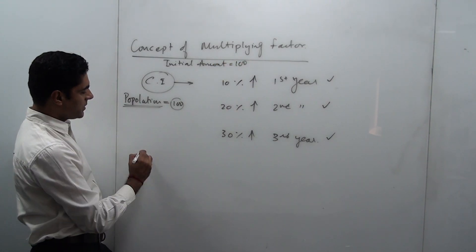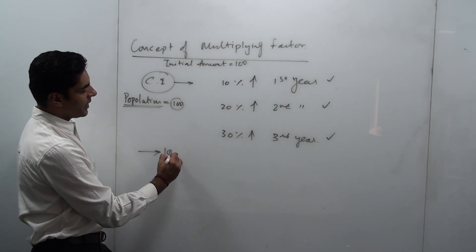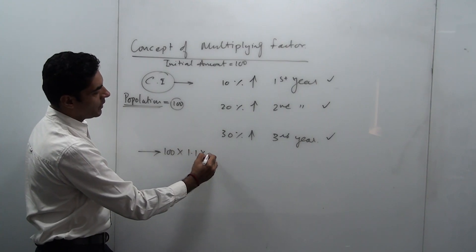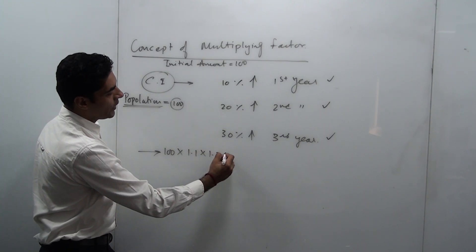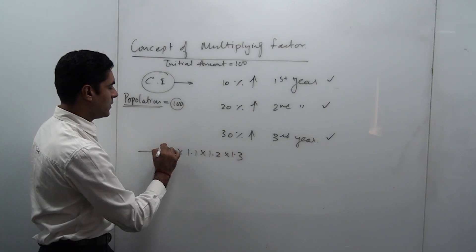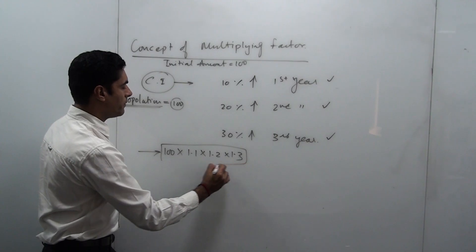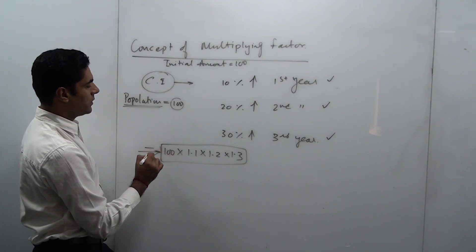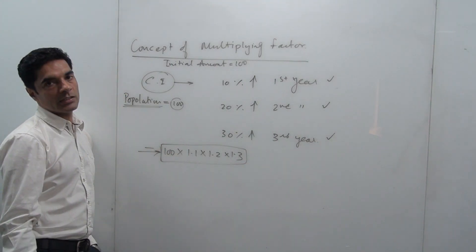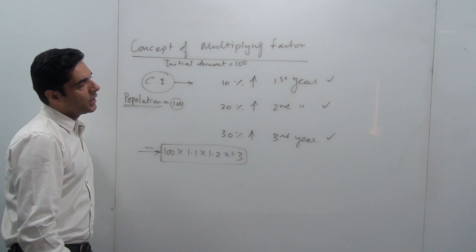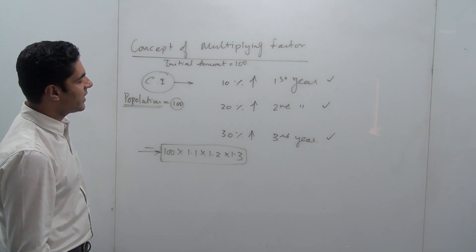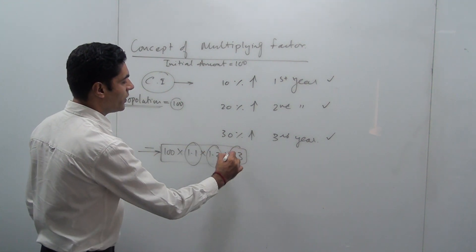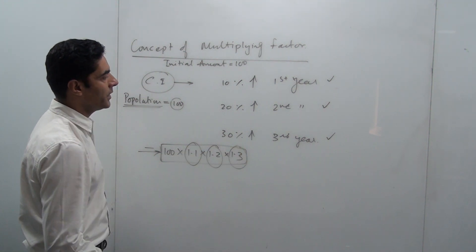So my answer could directly be 100 into 1.1 into 1.2 into 1.3. This will give me the net value after 3 years. So this is the direct approach. In case you are wondering how the golden figures of 1.1, 1.2, and 1.3 are coming — it's very simple.